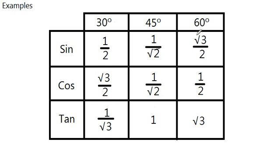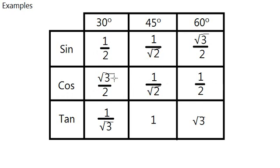You have to learn these. It's a bit messy. Sine 30 is a half, sine 45 is 1 over root 2, sine 60 is root 3 over 2. Then the reverse is cosine — so sine and cosine share the same values but in reverse order. That is one possible way to remember it.